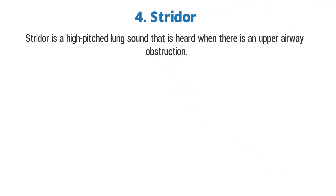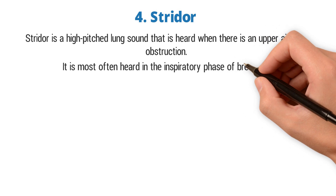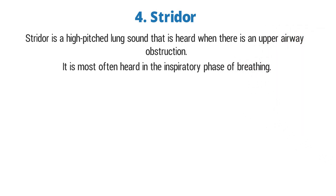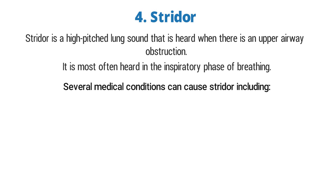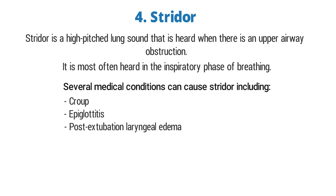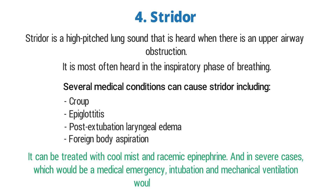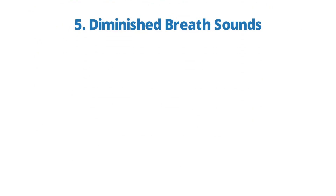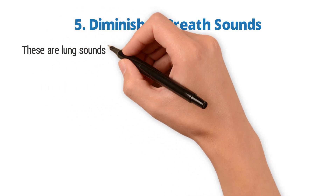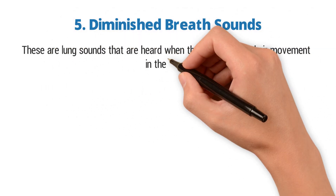Next up is stridor — a high-pitched lung sound that is heard when there is an upper airway obstruction. It is most often heard in the inspiratory phase of breathing. Several medical conditions can cause stridor including croup, epiglottitis, post-extubation laryngeal edema, and foreign body aspiration. Stridor can be treated with cool mist and racemic epinephrine, but in severe cases — which would be a medical emergency — intubation and mechanical ventilation would be indicated.